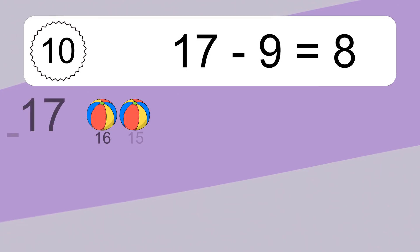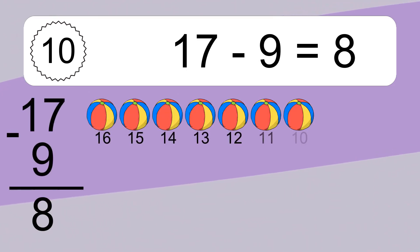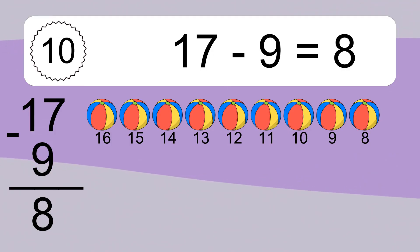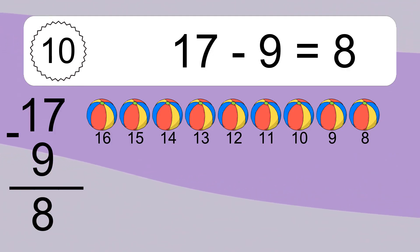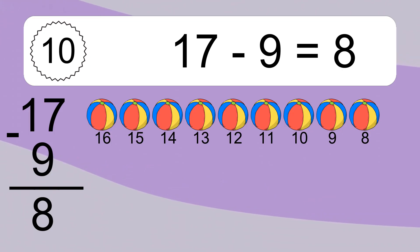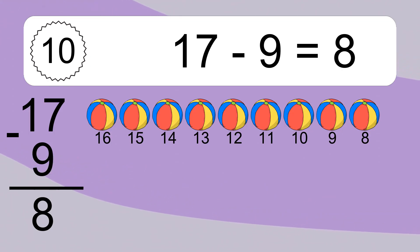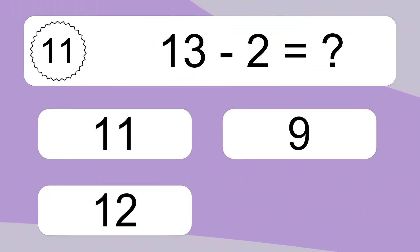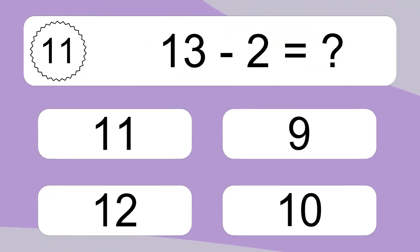17 minus 9 equals what? 17 minus 9 equals 8. Let's count it: 16, 15, 14, 13, 12, 11, 10, 9, 8.